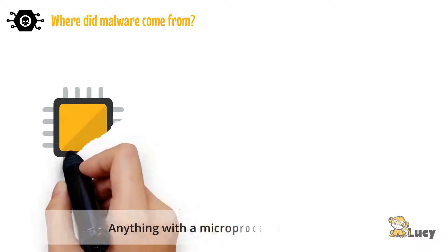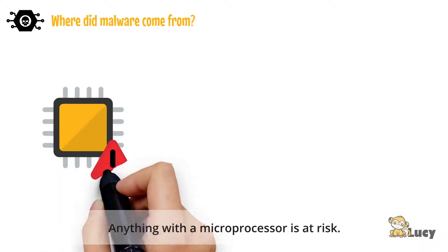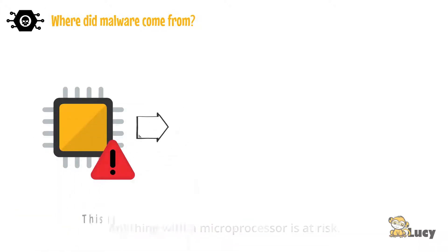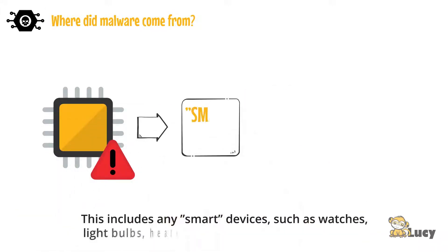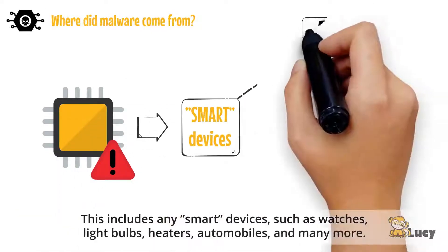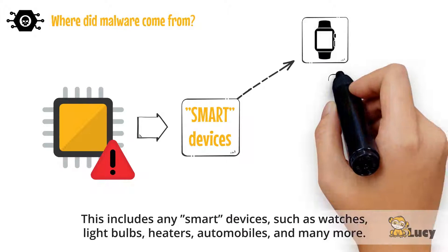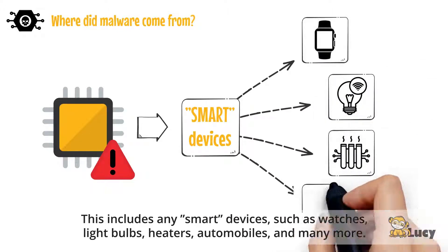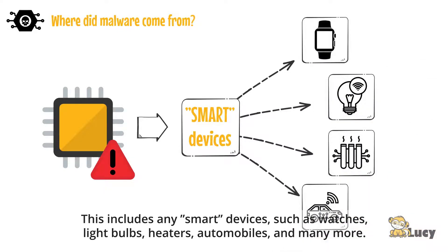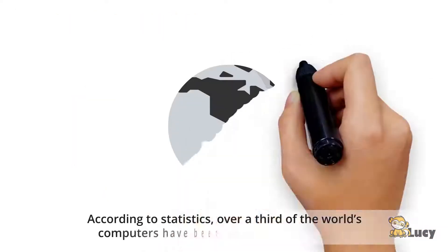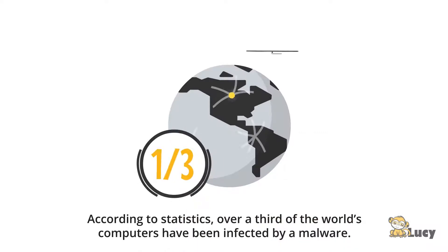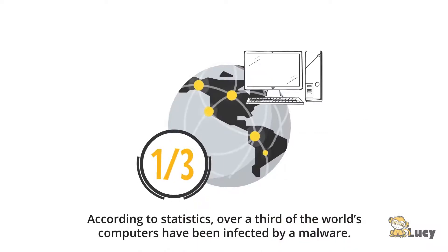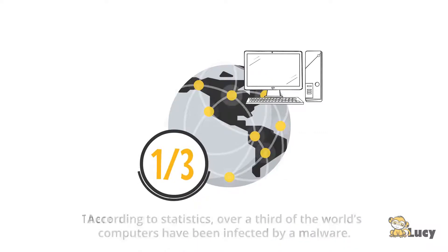Anything with a microprocessor is at risk. This includes any smart devices such as watches, light bulbs, heaters, automobiles, and many more. According to statistics, over a third of the world's computers have been infected by malware.